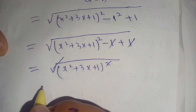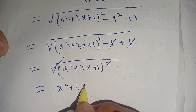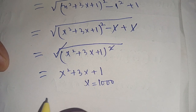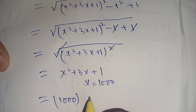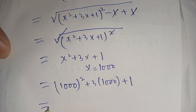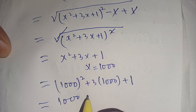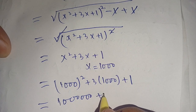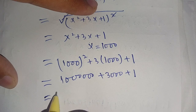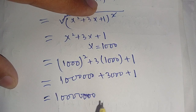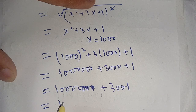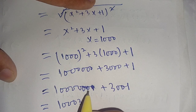We can cancel the square with the square root and our expression becomes x²+3x+1. Since x equals 1000, substituting gives us 1000² plus 3 times 1000 plus 1, which is 1,000,000 plus 3000 plus 1, equal to 1,003,001. That is our final result.